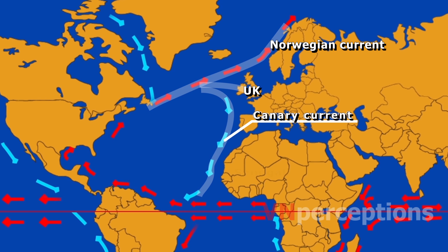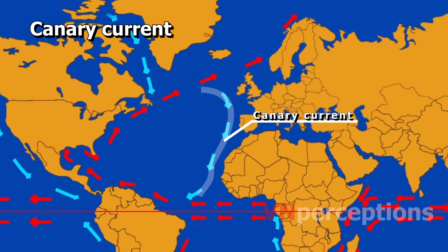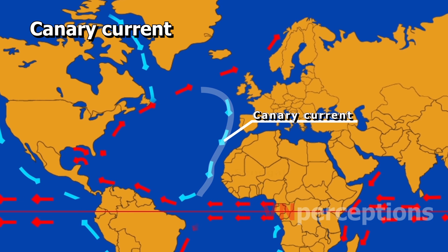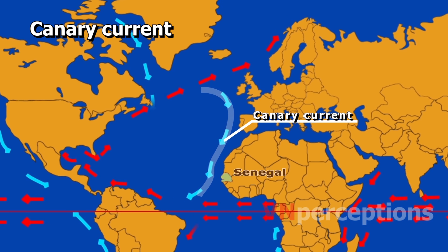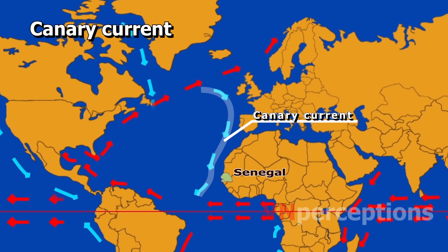The North Atlantic Drift is a warm current that keeps the ports of Europe free from ice even in winter. Next is the Canary Current. The Canary Current is an eastern boundary current that branches south from the North Atlantic Current and flows southwest as far as Senegal, where it turns west and later joins the Atlantic North Equatorial Current. The current is named after the Canary Islands.